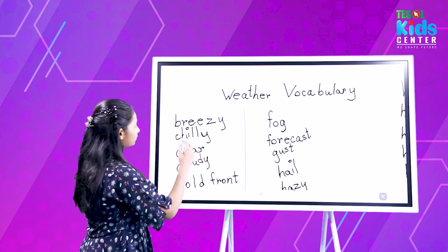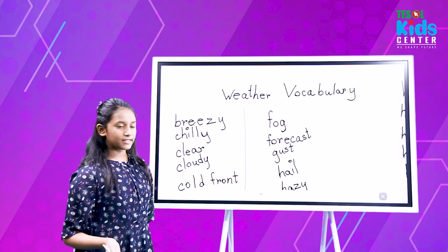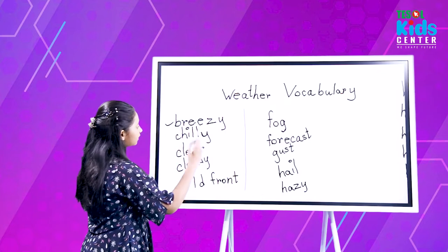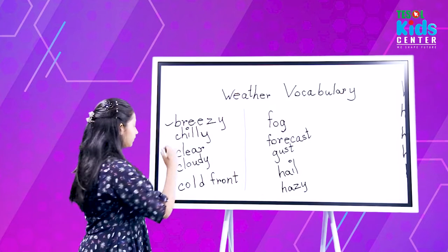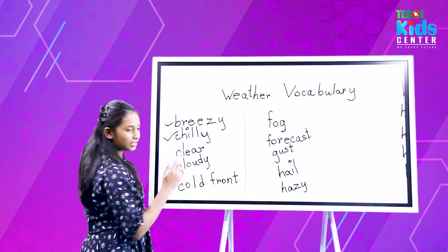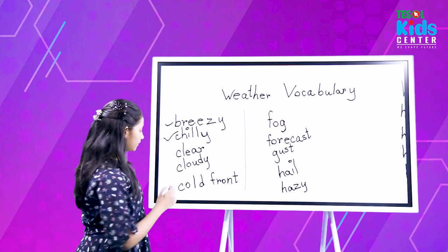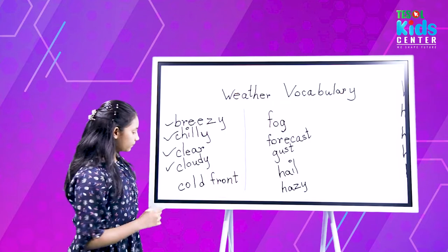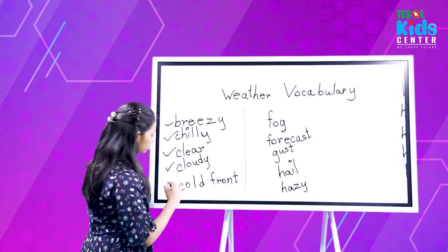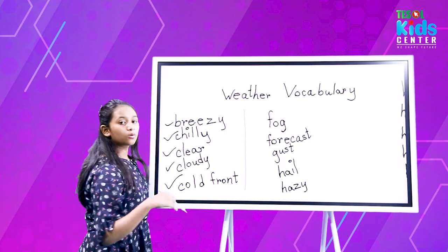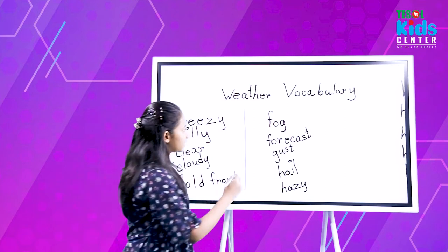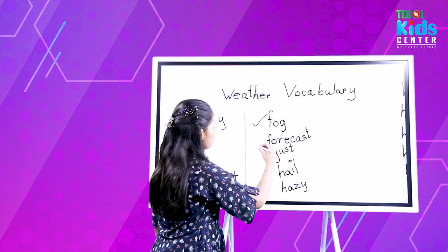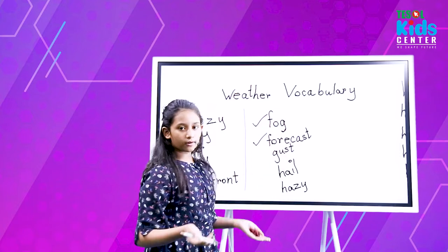The first one is breezy. The second one is chilly. The third one is clear. Then cloudy. Then cold front. Then fog. Forecast.